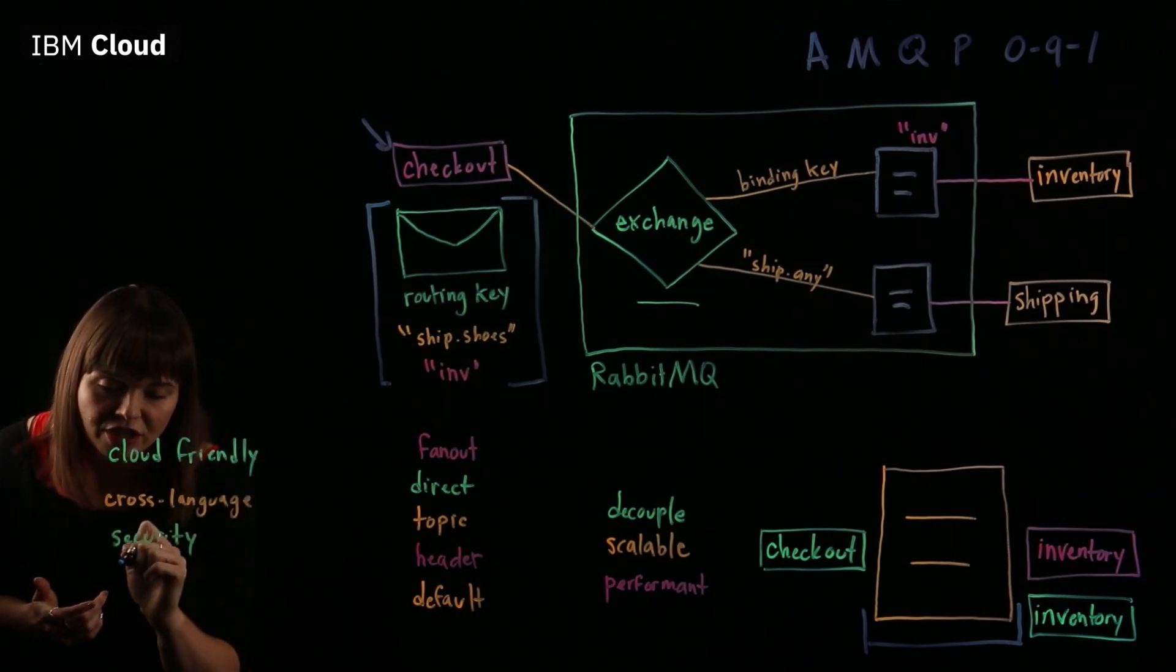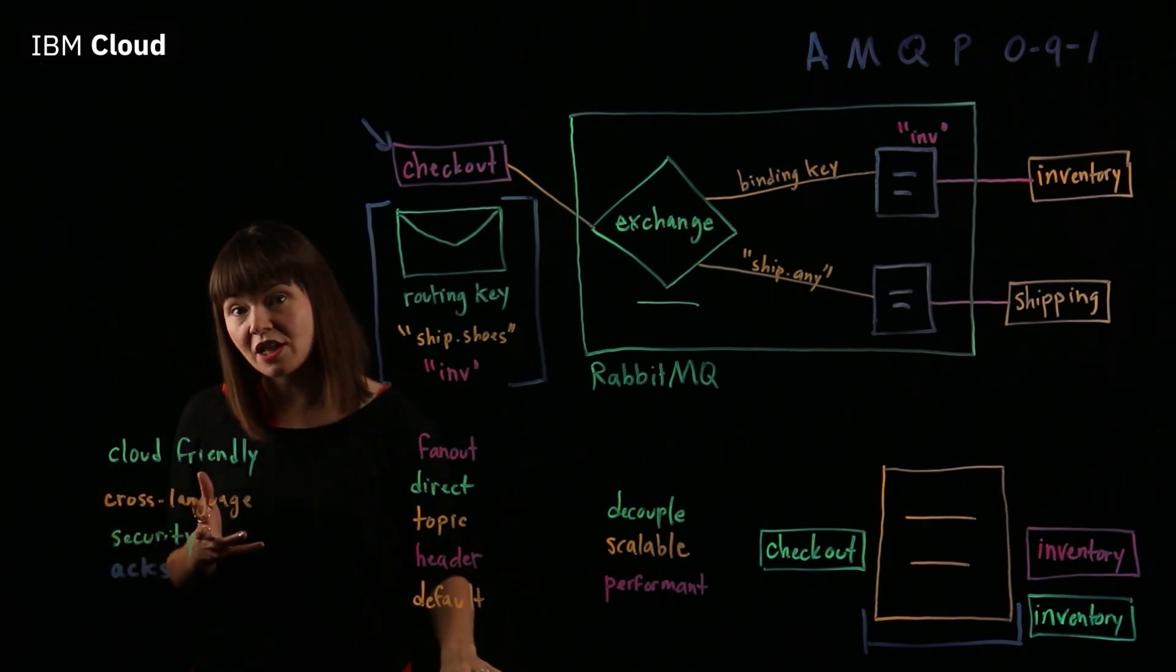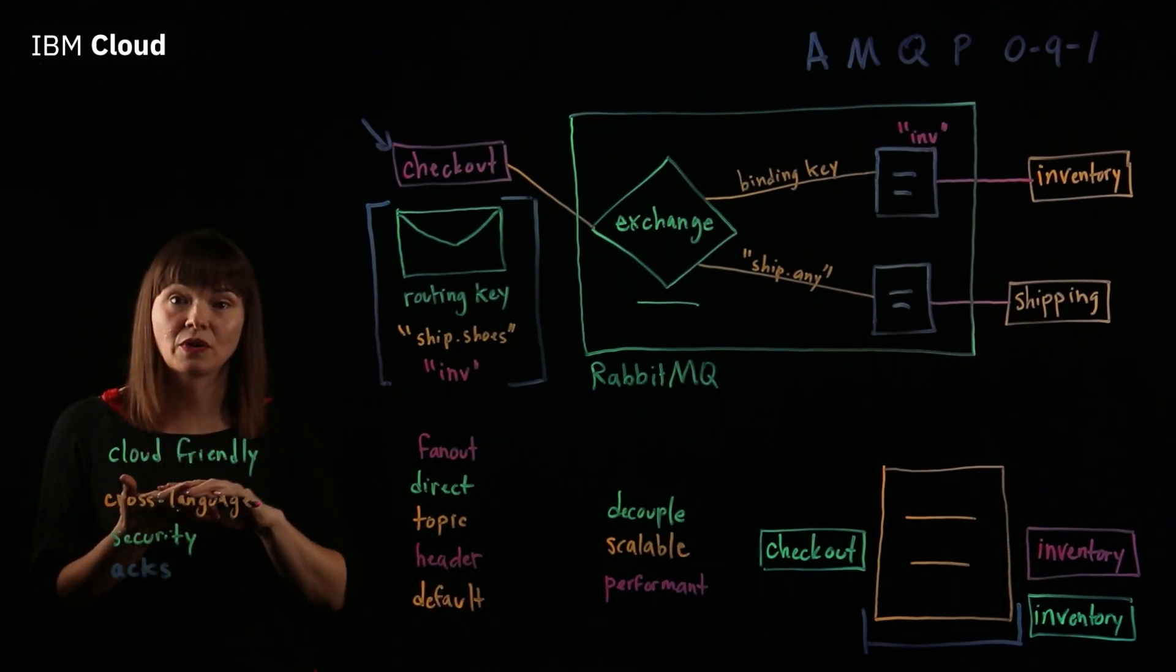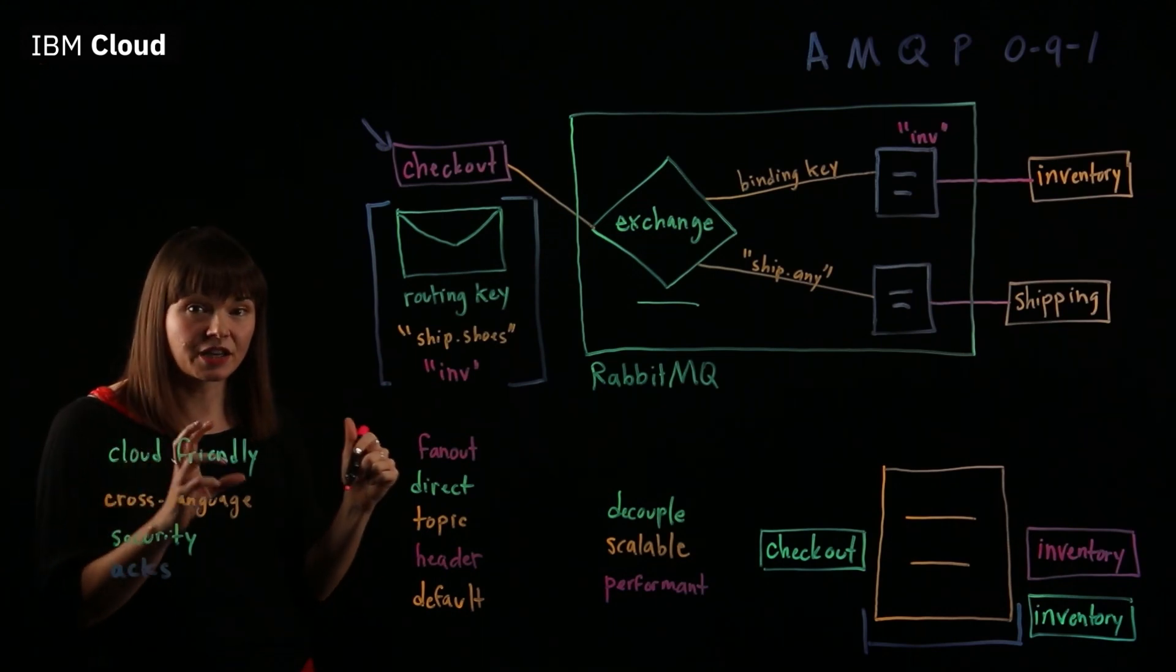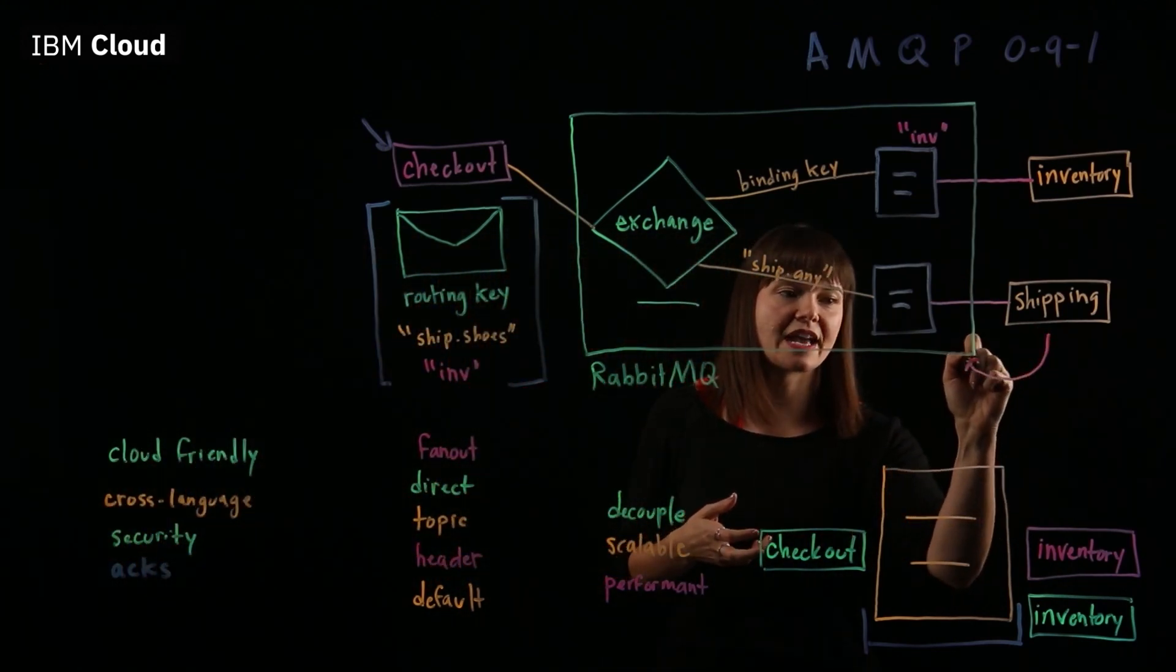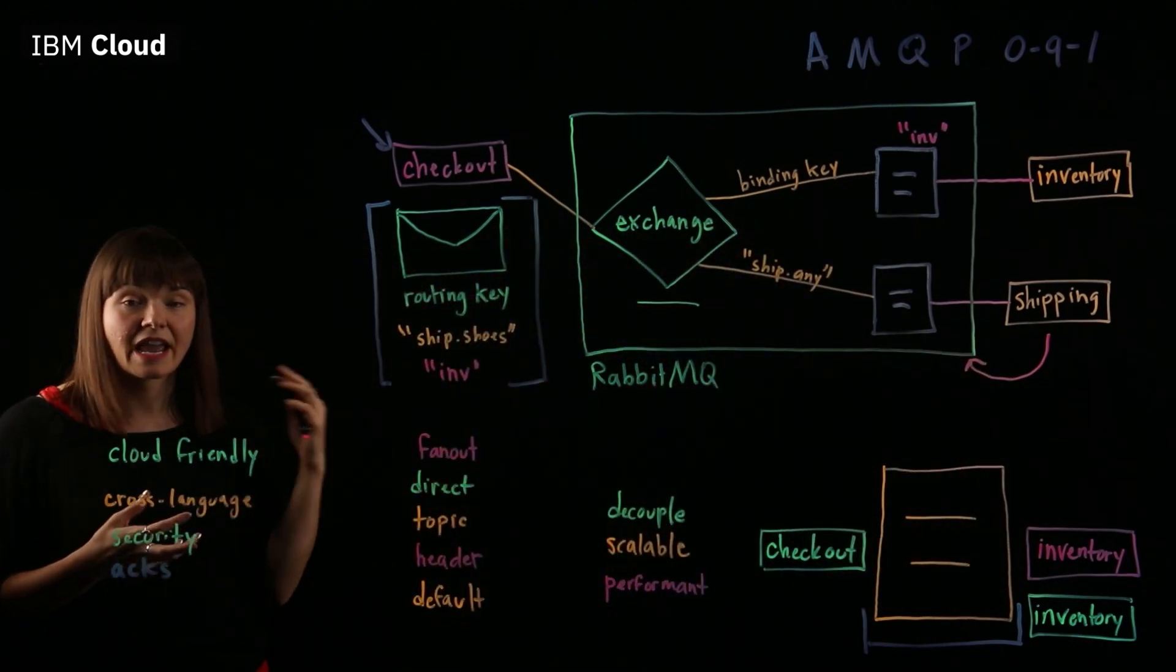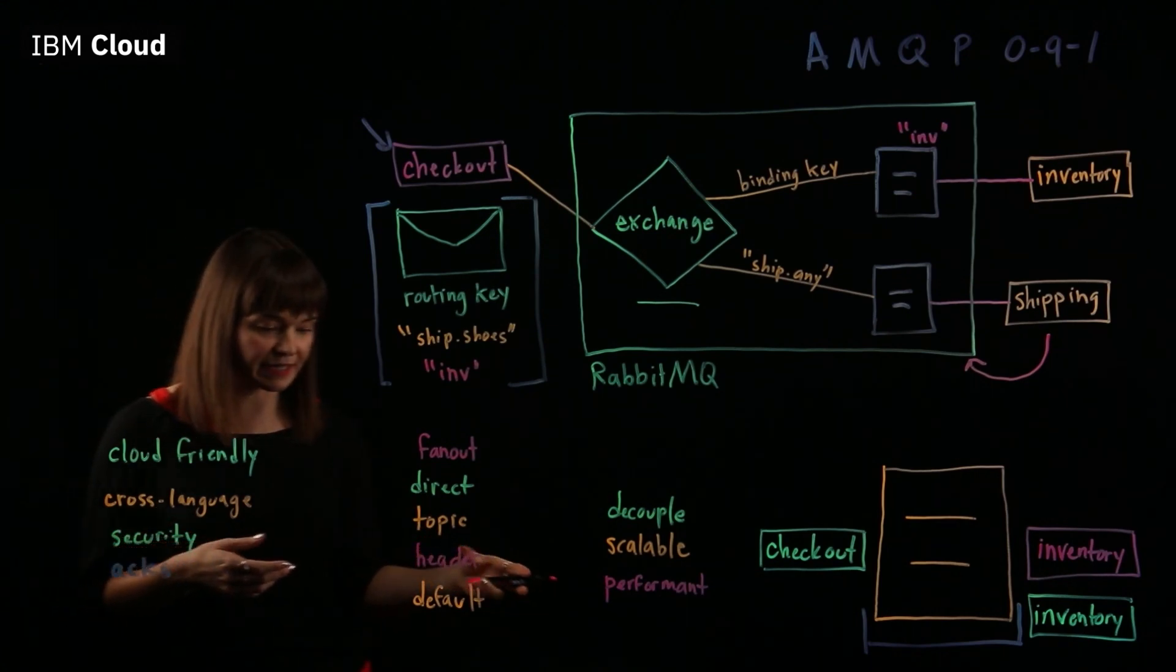It does message acknowledgements. So message acknowledgements, when a message is in a queue and it goes to the consumer, the message stays in the queue until the consumer lets the broker know that it has received the message. And only then is the message taken out of the queue. And that prevents the system from losing any messages.